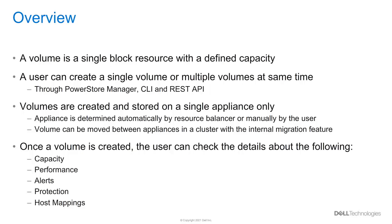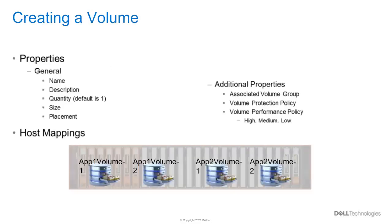Once the volume is created, it has different properties associated with it, such as capacity, performance, protection, alerts, and host mappings. To create volumes, we need to provide a name for a single volume or a prefix if creating multiple volumes, as well as the quantity and size, with the option to provide a description and appliance placement. In addition to general information, there are also additional properties that can be set, such as associated volume groups, volume protection policy, and volume performance policy.